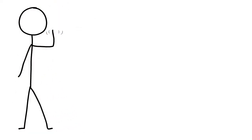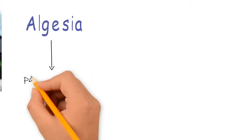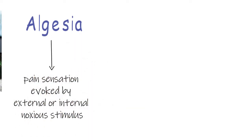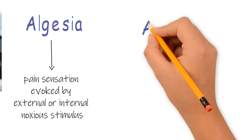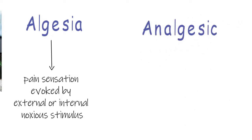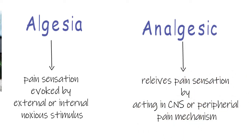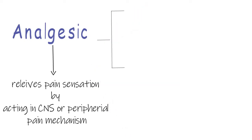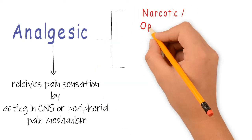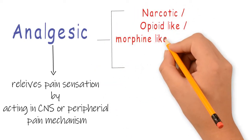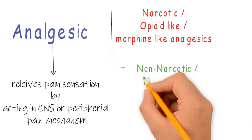In this video we are going to study about some basics related to opioids. The term algesia means pain sensation which is evoked by a noxious stimulus. Analgesics relieve pain by acting either on the CNS or on peripheral pain mechanisms. Analgesics are divided into two categories: narcotic opioid or morphine-like analgesics, and non-narcotic non-opioid aspirin-like analgesics.